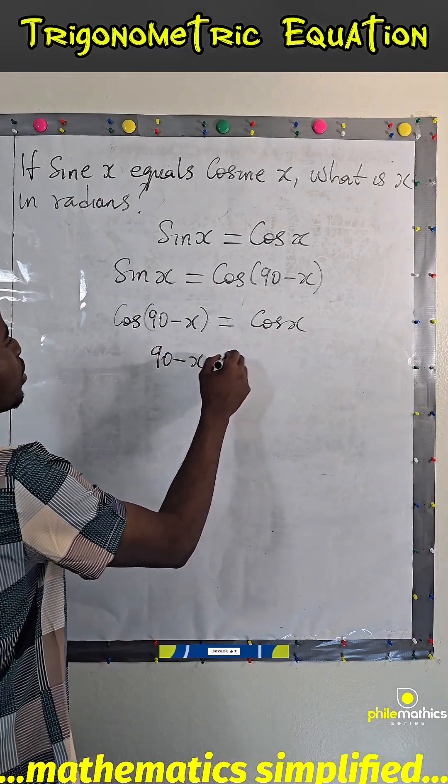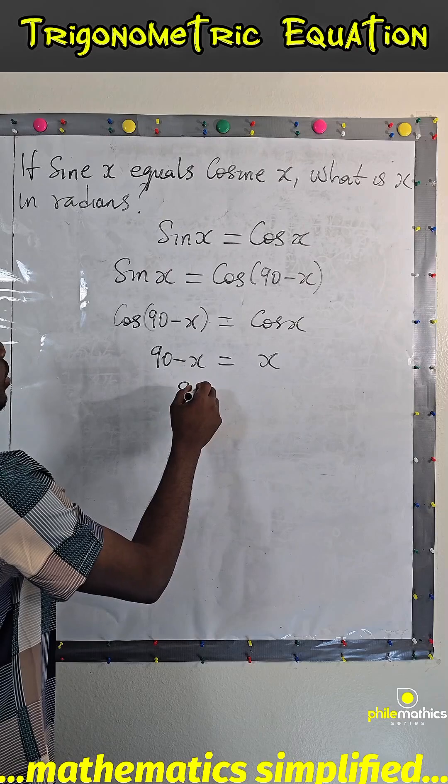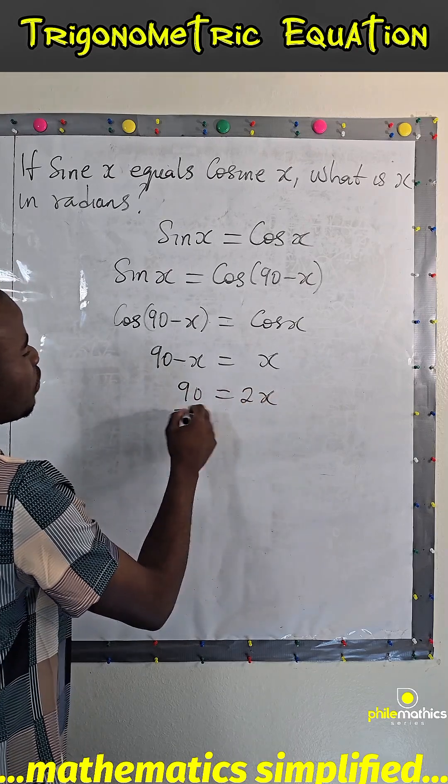90 minus x equals x. So 90 equals 2x divided by 2.